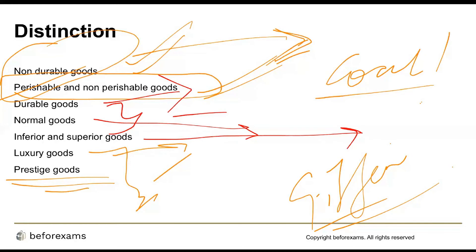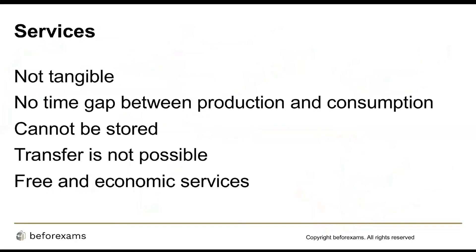These were the kinds of goods in general. Now we look at the classification of services. The prominent kinds of services include free services and economic services. Free services are those that cannot be bought in the market — like parents' love for their children or a mother's cooking for her family — and they have no monetary value. Economic services are those that have economic value and can be bought in the market, like teachers, doctors, engineers, and bank officers.